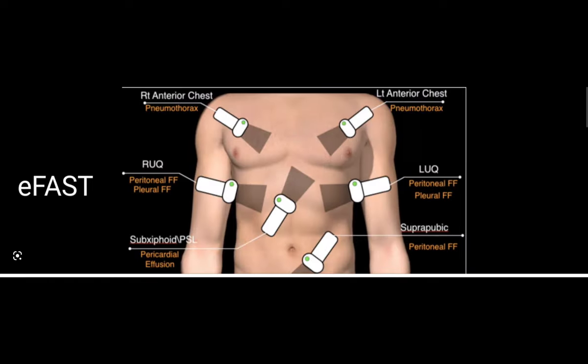This is an image of E-FAST (extended focused assessment with sonography in trauma). E-FAST is used in trauma cases to quickly identify life-threatening injuries like pneumothorax, pleural effusion, and peritoneal effusions. The areas examined include right and left anterior chest for pneumothorax, right and left upper quadrant, subxiphoid area for pericardial effusion, and suprapubic area.